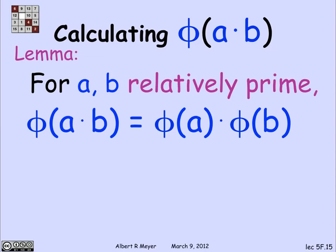This property of phi is called multiplicativity. It comes up a lot in number theory. A function is multiplicative when its value at a product of relatively prime numbers is the product of the values at those two relatively prime numbers. So phi is multiplicative.